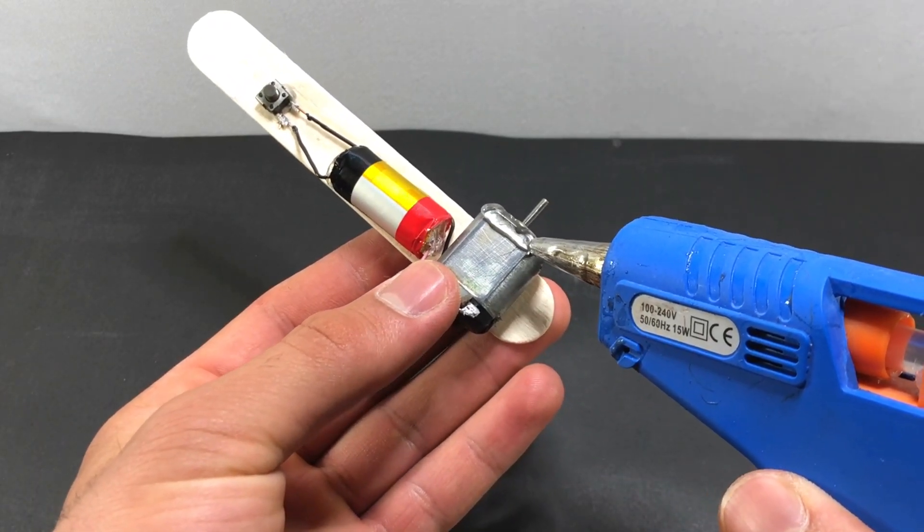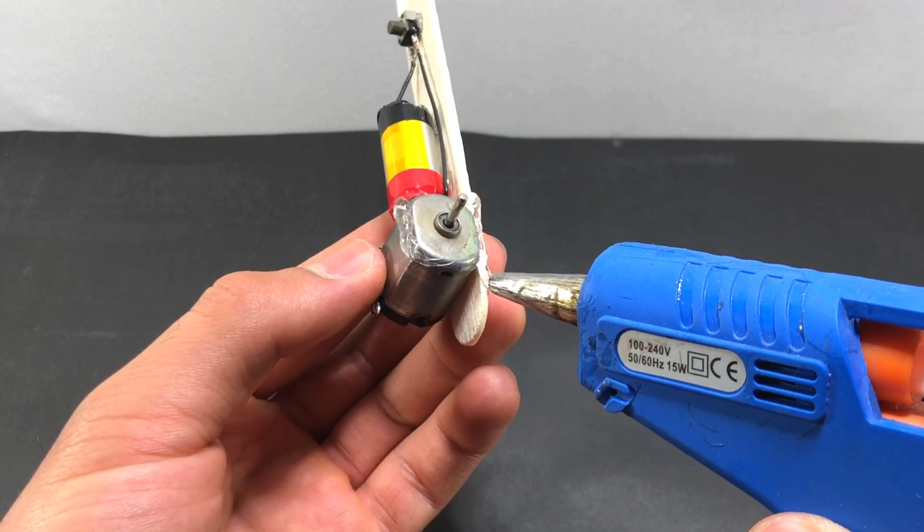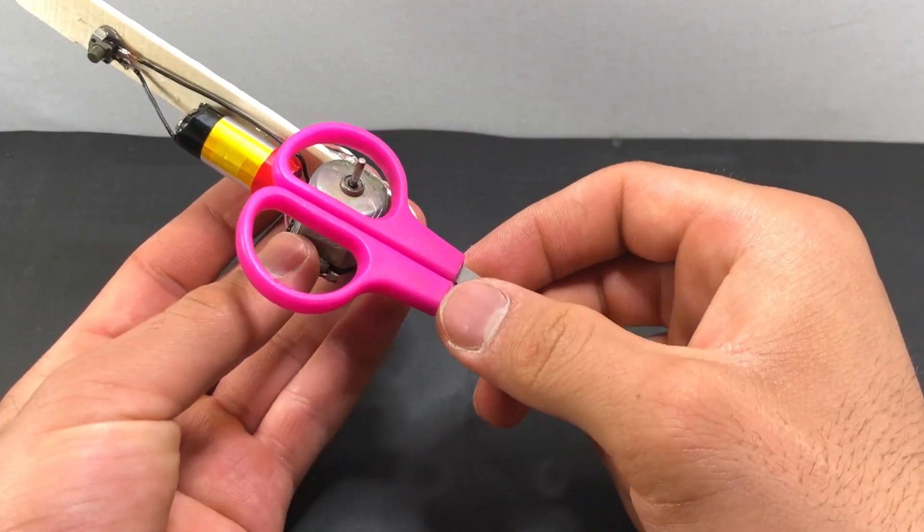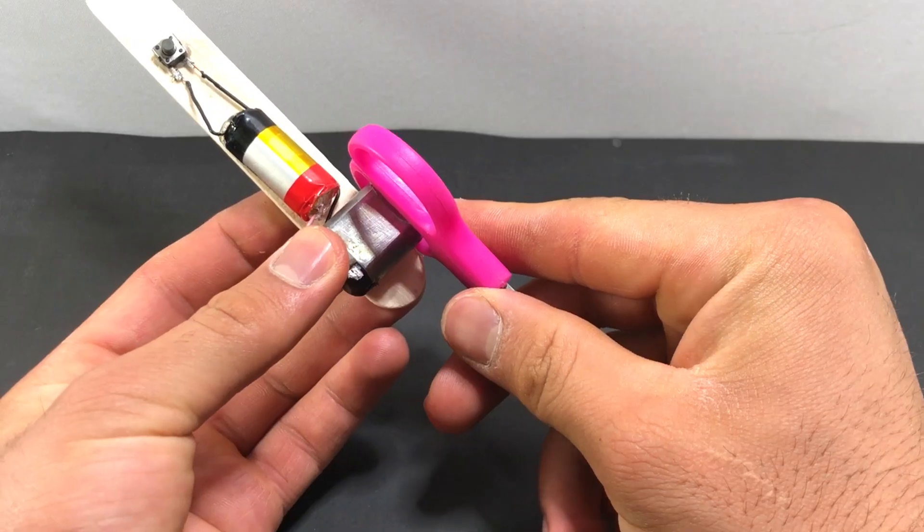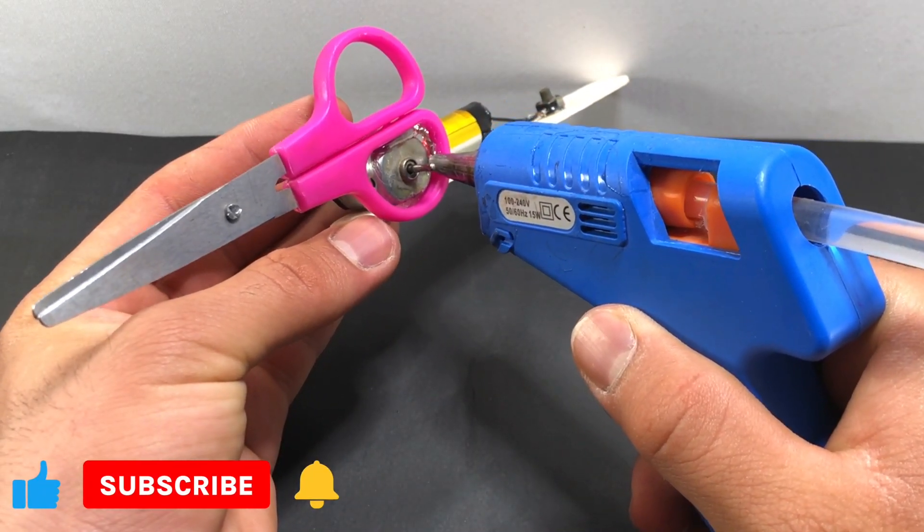Using hot glue we connect the scissors to the DC motor. In this part we use a lot of hot glue to make the scissors stronger.